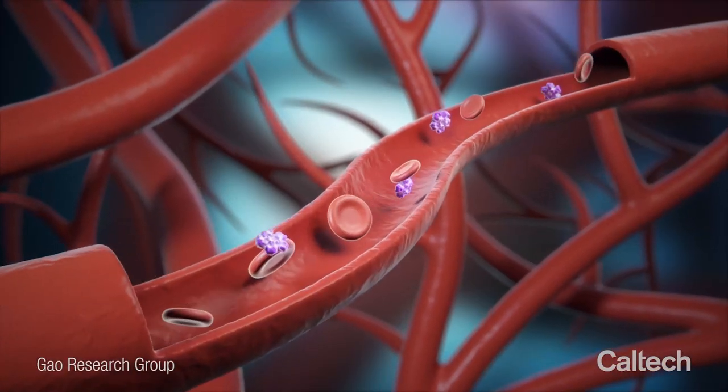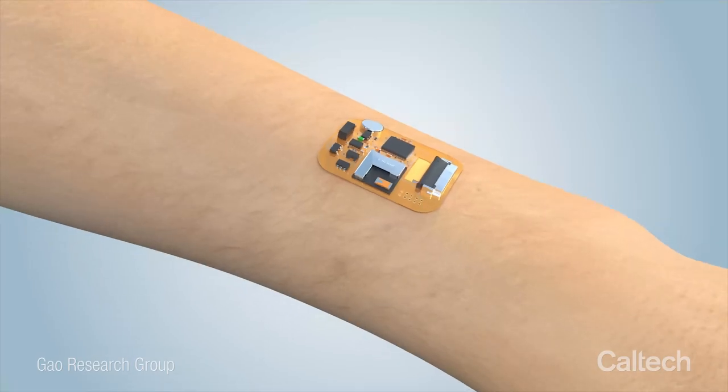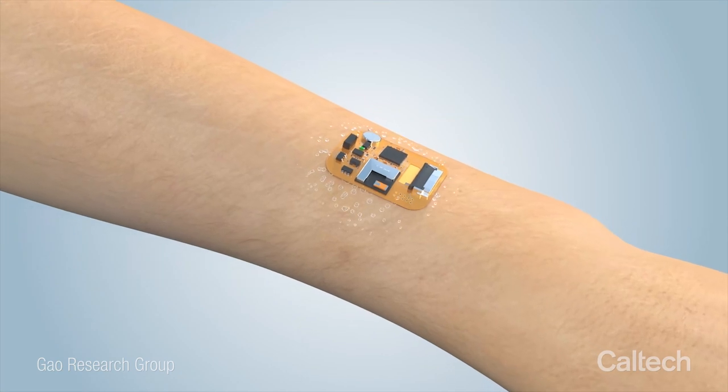CRP exists in low concentration in the blood and its large molecular size means even lower amounts pass into sweat, making it very difficult to detect.